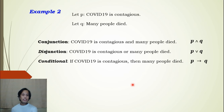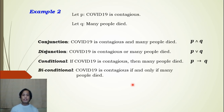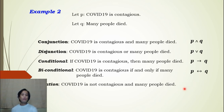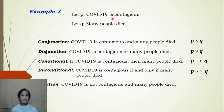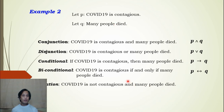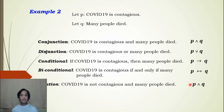For biconditional: COVID-19 is contagious if and only if many people died, using the ↔ symbol. For negation, we write: COVID-19 is not contagious and many people died. Unlike the first example where both p and q were negated, here only p is negated — COVID-19 is not contagious — while q remains the same: many people died. Since 'and' is used, this is a negation of the conjunction, written as ~p ∧ q.